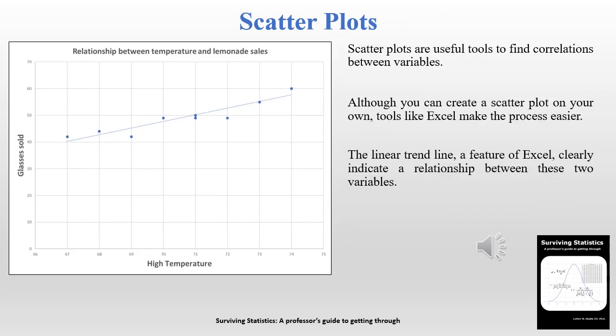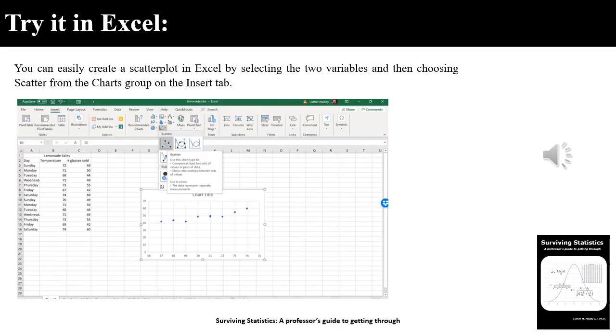With a small number of observations we could easily create a scatter plot on our own by plotting along the x-axis the high temperature and along the y-axis the glasses sold. We can draw a linear line and see from the scatter plot that there probably is a relationship — the higher the temperature, the higher the number of glasses sold. Of course Excel makes this much easier. To create a scatter plot in Excel, just select the two variables and find Scatter Plot in the Charts group.